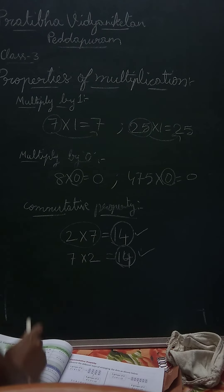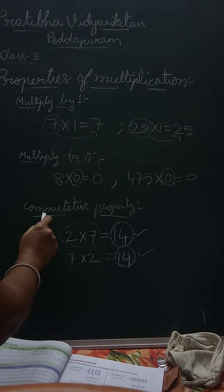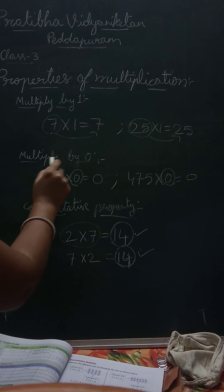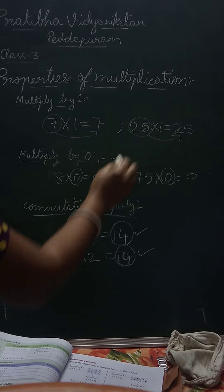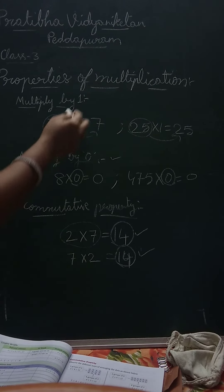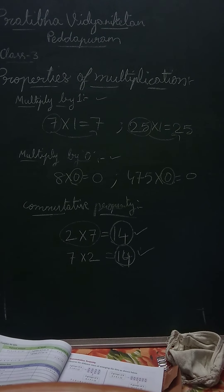So to summarize: the commutative property, multiply by 0, and multiply by 1 are the three properties of multiplication.